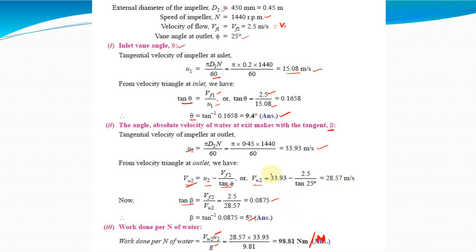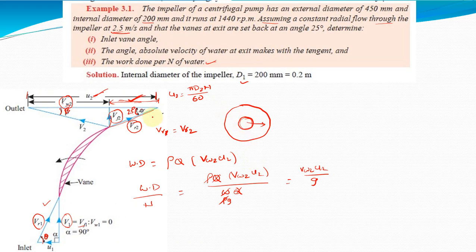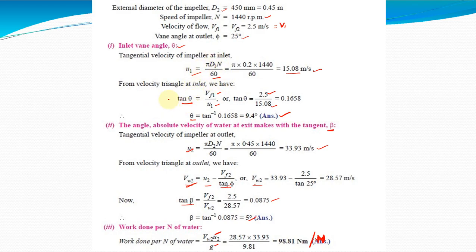So this is how we can solve this problem. First, understand the problem and the given data. Then, for the backward vane angle, draw the velocity triangle. By following the velocity triangle, you can simply solve for all three required quantities. Thank you.